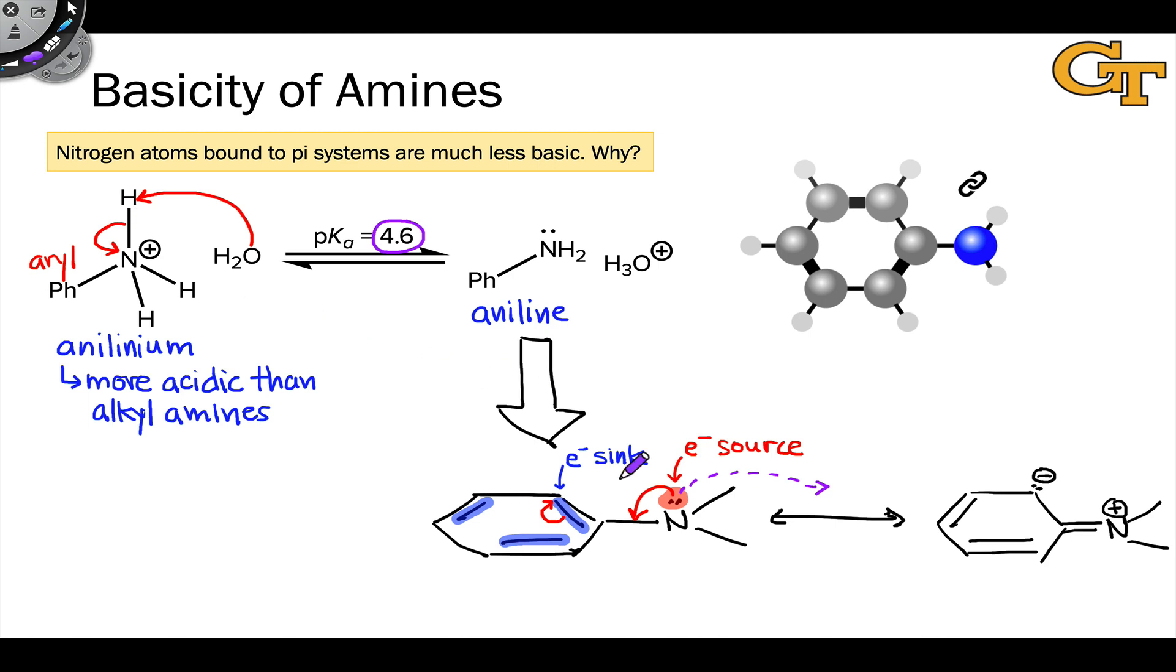This makes the pKa of the conjugate acid much lower, and the conjugate acid much more acidic than the conjugate acid of an alkyl amine. Another way of saying this is that this nitrogen within the aryl amine is much less basic than an alkyl amine. And so really, to put this right, we should say that the anilinium is much more acidic than an alkyl ammonium, and the amino nitrogen is less basic than an alkyl amine, the neutral conjugate base.